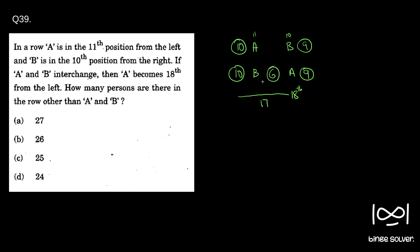There has to be 6 people between A and B. So 6 plus 1 is 7, plus 10 is 17. So A will be 18.